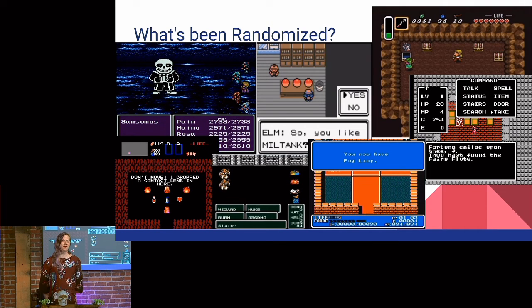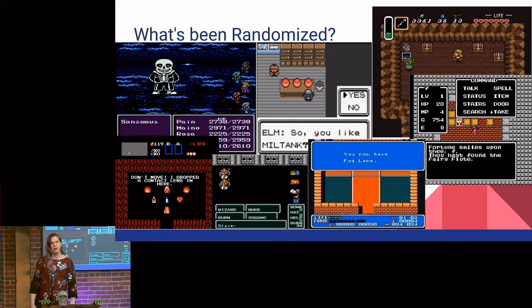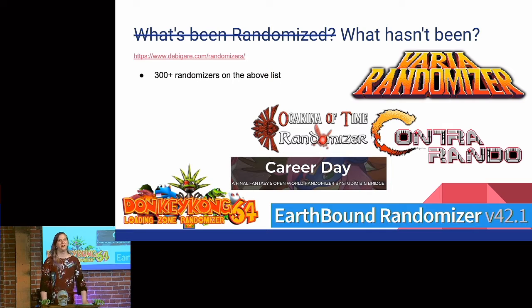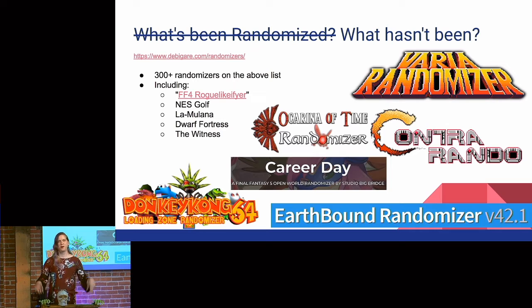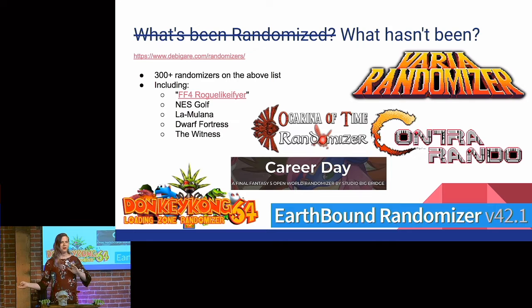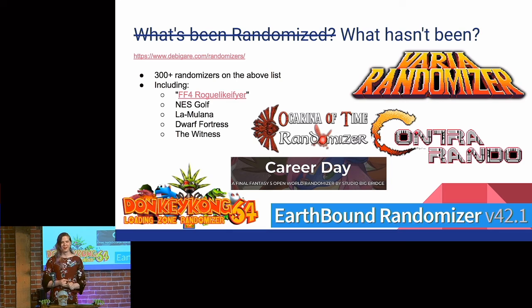So what has been randomized? Here are some screenshots of a whole bunch of games. The real answer is: what hasn't been randomized? The link at debbiegaray.com/randomizers — I did a count a few nights ago and there were at least 300 different randomizers on that list, including the Final Fantasy 4 roguelike, NES Golf, La Mulana, both the new version and the original. Dwarf Fortress has a randomizer — that's wild. And shoutouts to The Witness, it has been randomized.